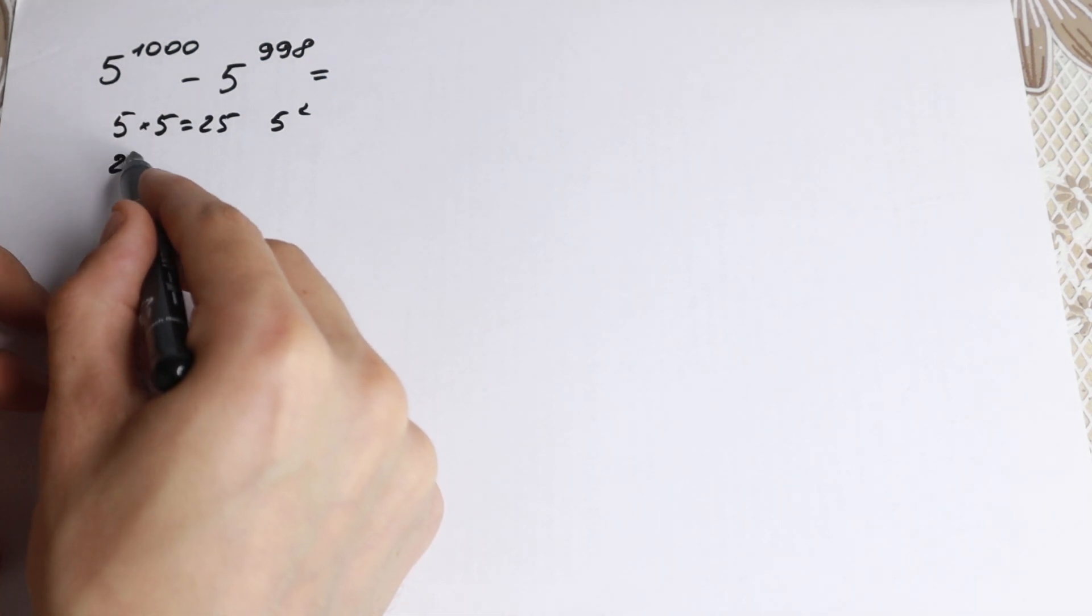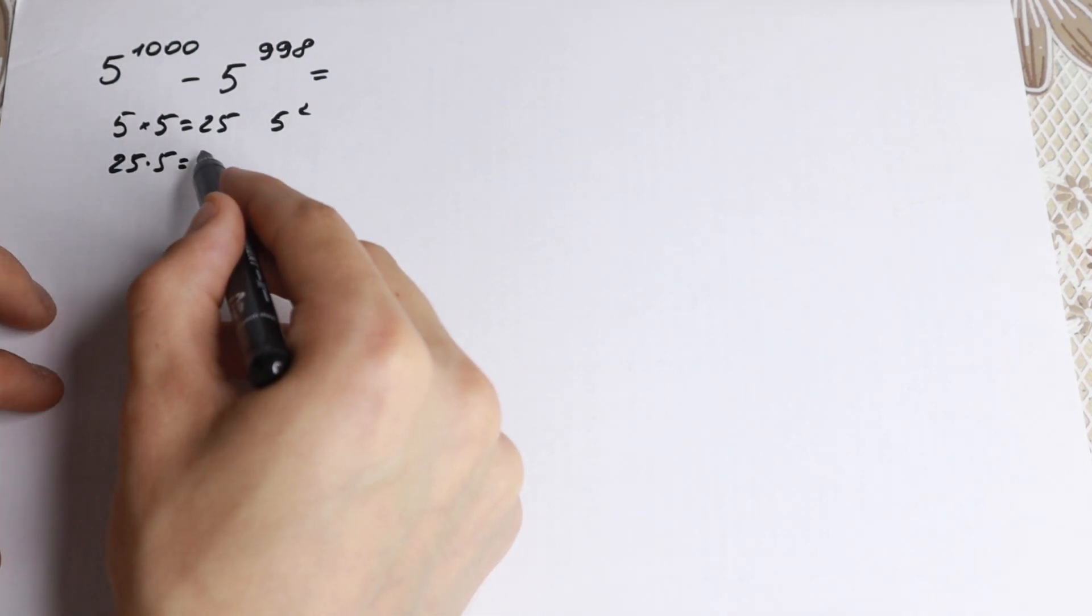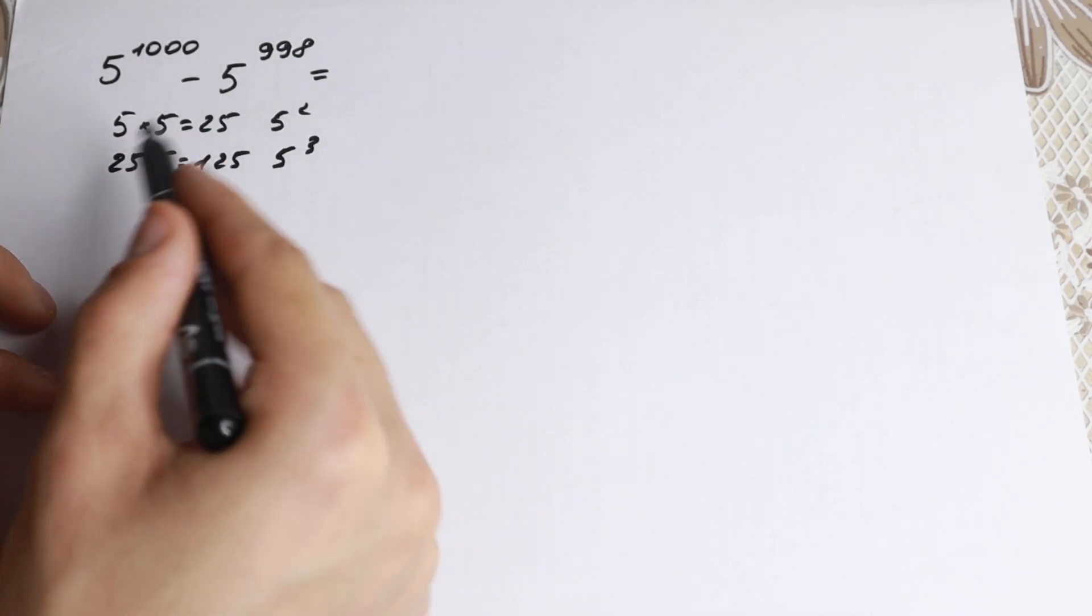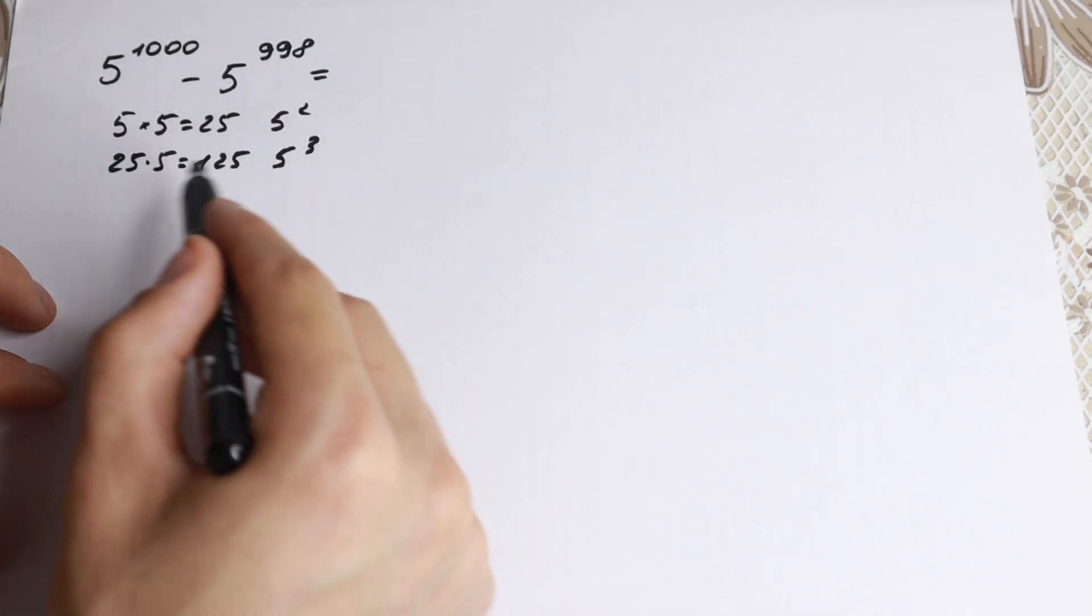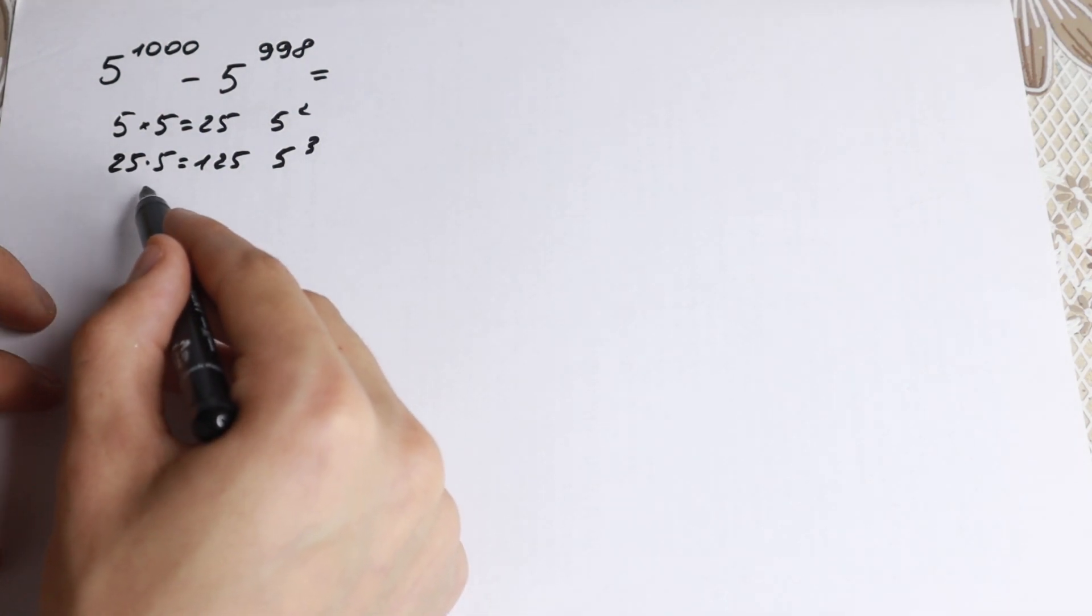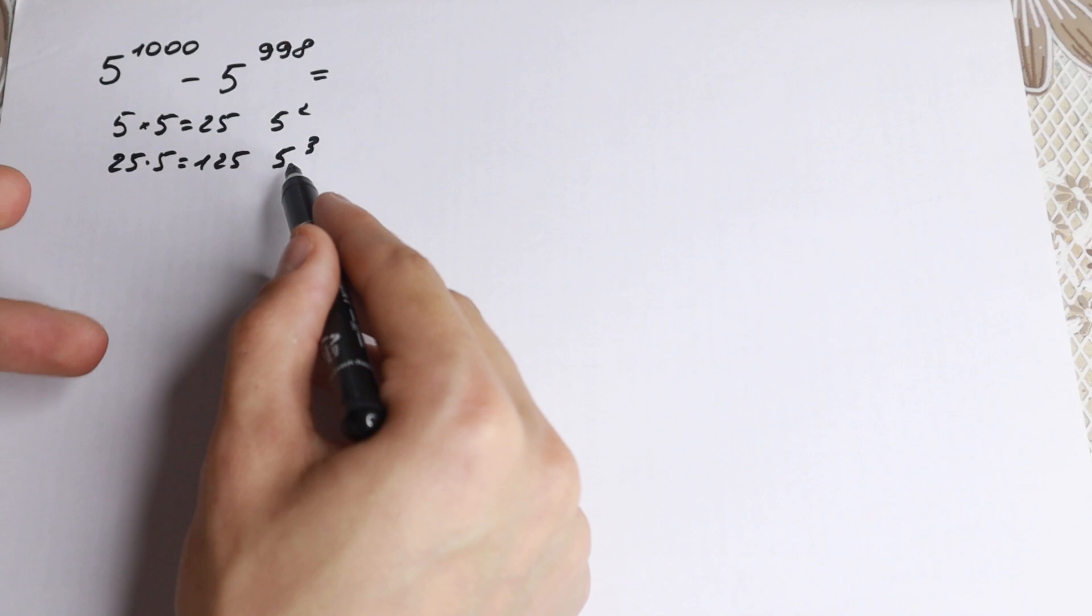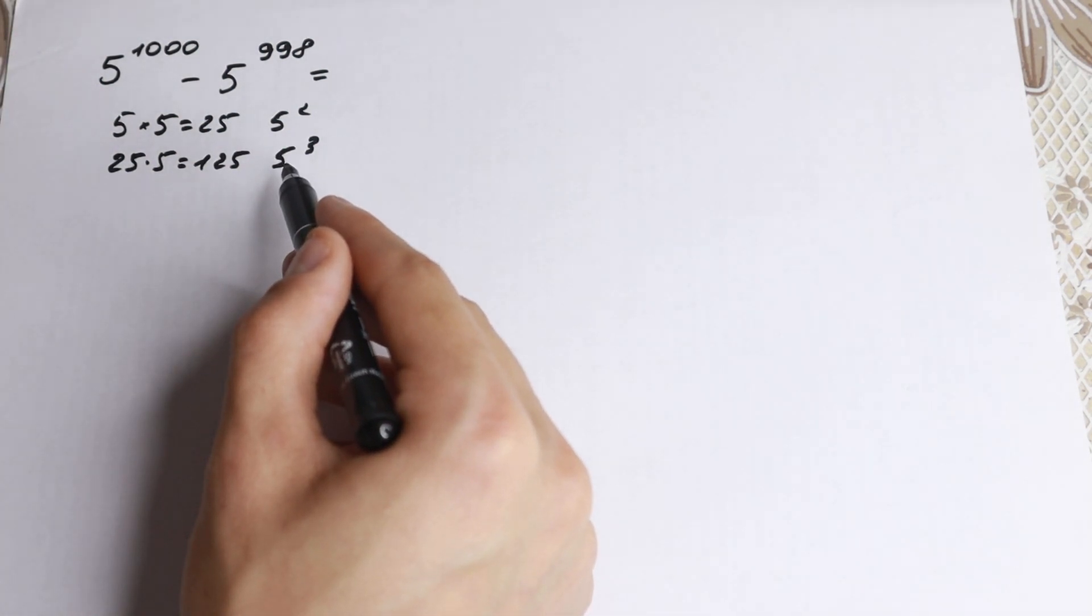They continue: multiply 25 times 5 to get 125, which is 5 cubed, and try to go step by step to subtract. I hope you don't make this mistake because you can multiply to get 5 to the 4th, 5 to the 5th power, maybe to 5 to the 10th power. This is your maximum.